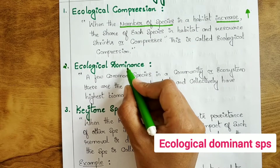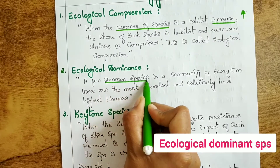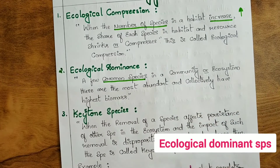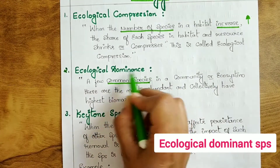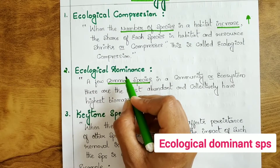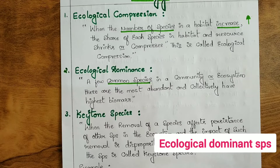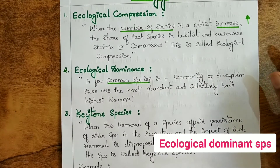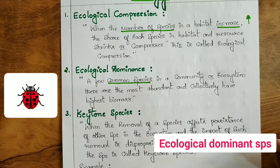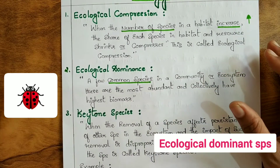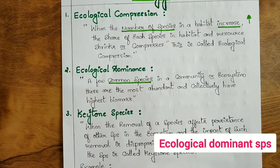Ecological dominance: a few common species in a community or ecosystem that are most abundant and collectively have the highest biomass are called ecologically dominant species. These species are very commonly found in a particular ecosystem and have high abundance relative to other species. For example, if you go to a forest and see beetles in large numbers everywhere you look, those beetles are ecologically dominant species.